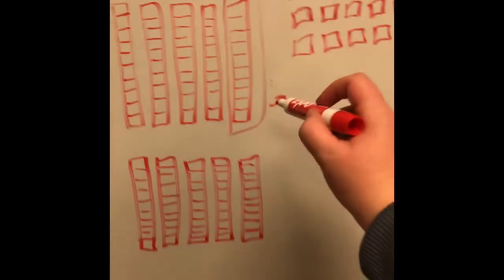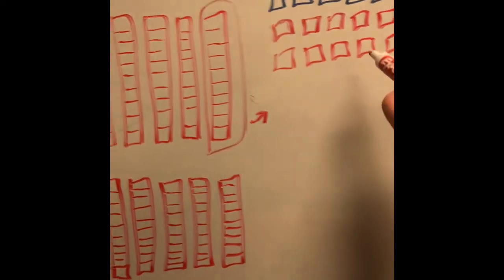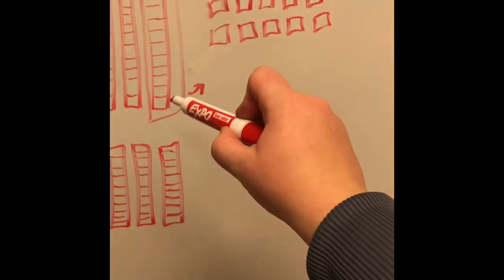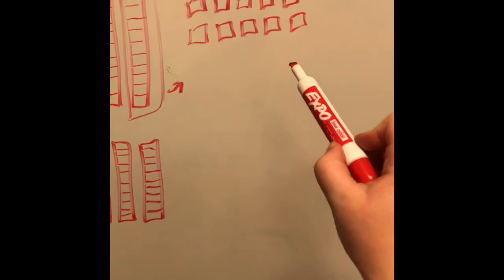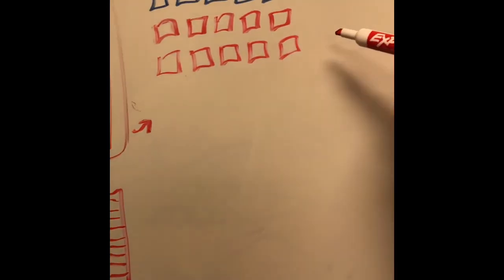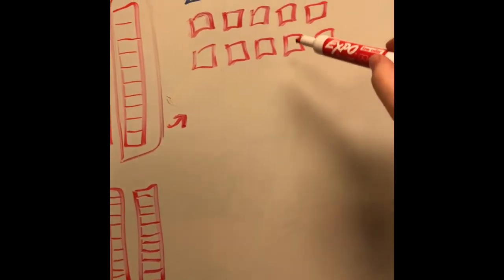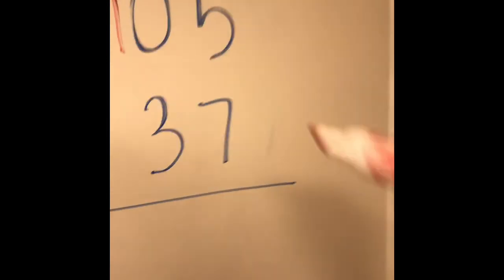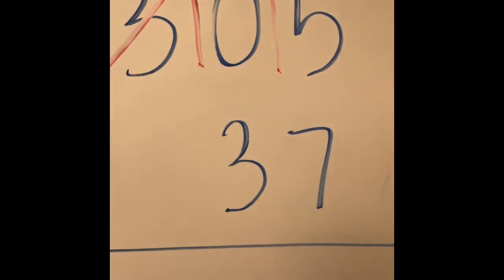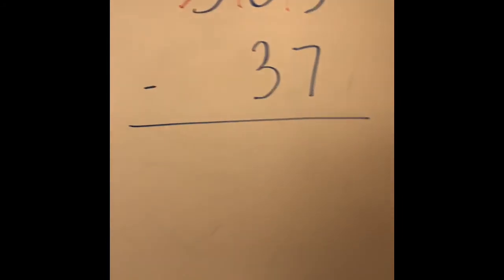So essentially now that we brought our whole rod into the ones place, one rod equals ten cubes. So therefore I drew ten little cubes, so total over here we now have fifteen cubes in the singles position.